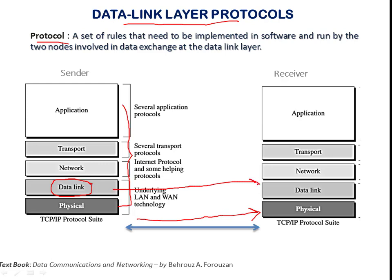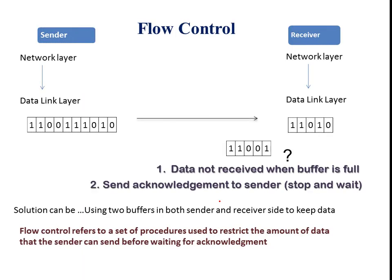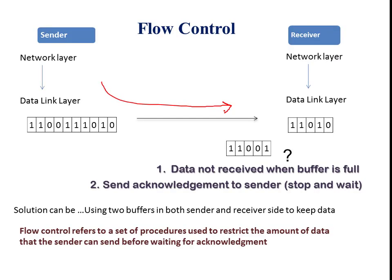We need to consider how the data is actually flowing without any disturbances and whether there is any error. So flow and error control, along with framing, are the functions of the data link layer. Generally, the data link layer collects information from the upper layer, keeps it in a packet, and that packet as a frame is transferred to the receiver.